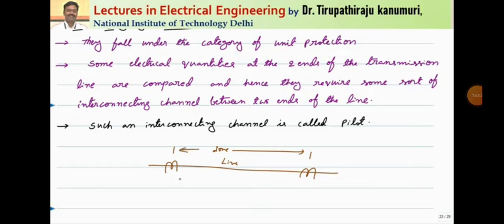We can either compare the currents on the secondary side or we can compare the voltages. These electrical quantities are compared at both ends and are used for making decisions. Such an interconnecting channel — meaning the channel connecting these two quantities — is called the pilot. That is why it is called pilot protection.